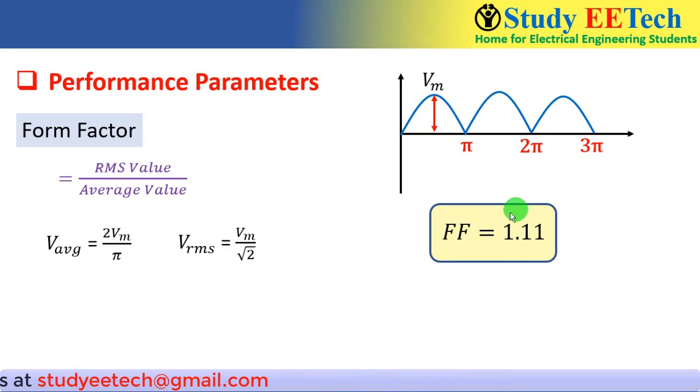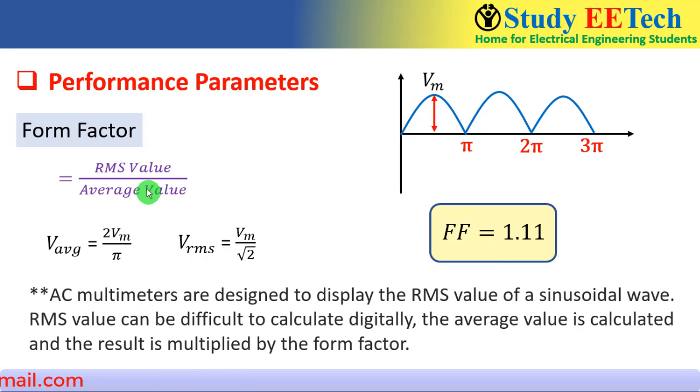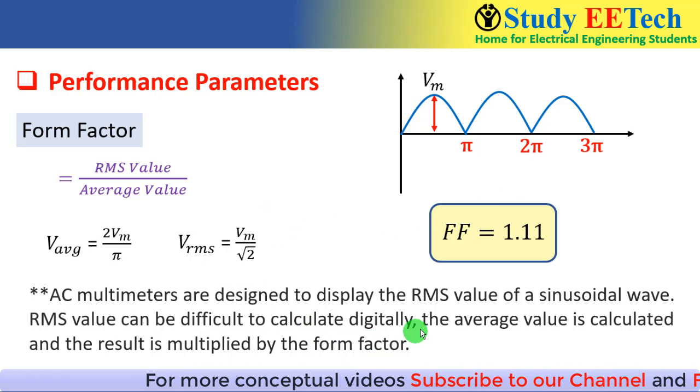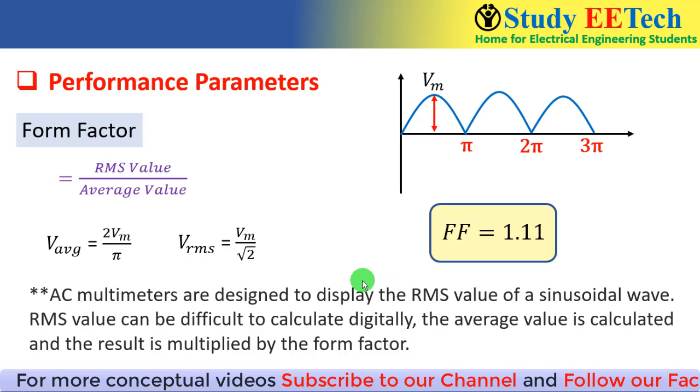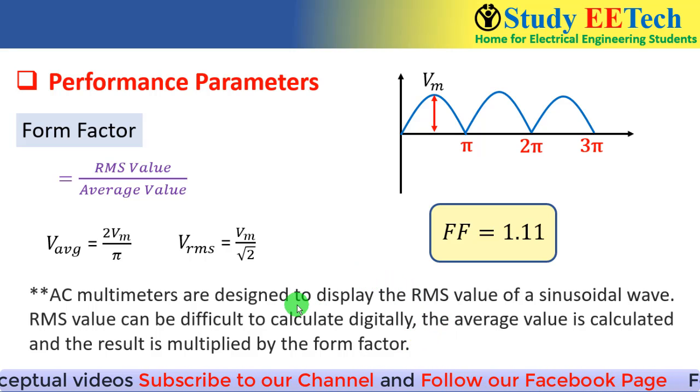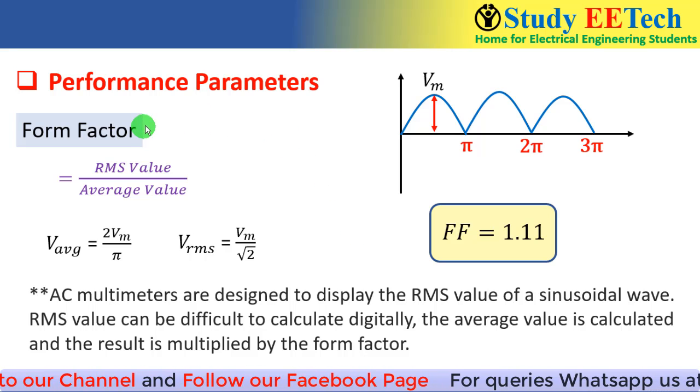The physical significance of this form factor is that multimeters are designed to display the RMS value of sinusoidal waves. But it is difficult to calculate digitally the RMS value. So what we do is in meters the average value is calculated and the result is multiplied by the known form factor. In this way the RMS value of sinusoidal quantities are displayed in the meters. So that is why from the practical point of view the form factor is so important.